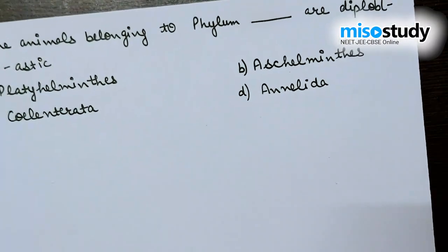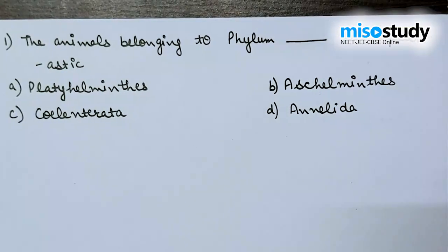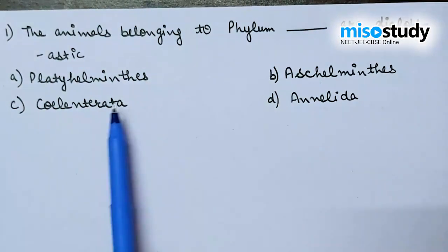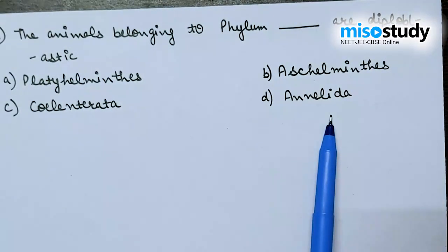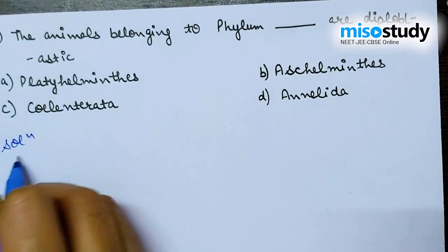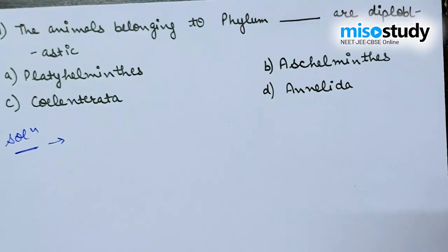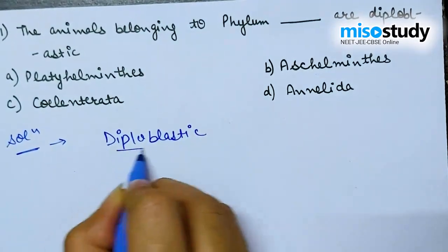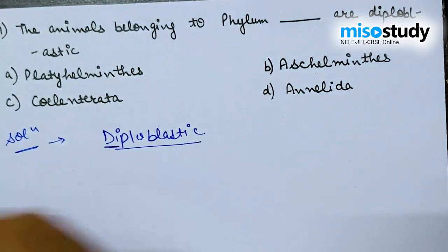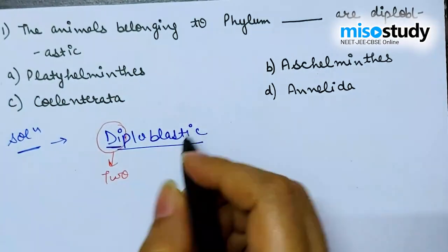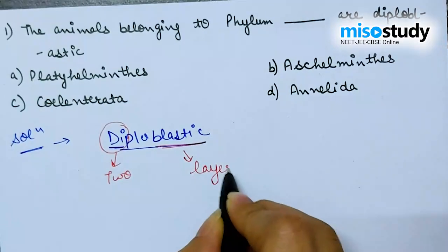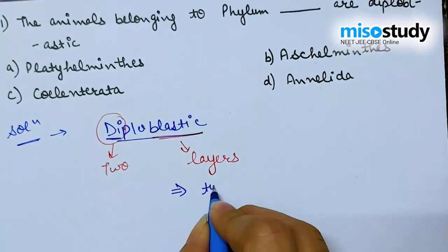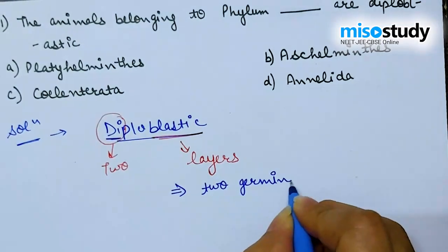Question number one from Animal Kingdom, which is very important from the NEET point of view: the animal belonging to phylum dash are diploblastic. The four options are: A) Platyhelminthes, B) Ascelminthes, C) Coelenterata, and D) Annelida. To find the solution, let's discuss the word 'diploblastic' — 'di' means two and 'blastic' refers to type of layers, so this is the feature with a presence of two germinal layers.